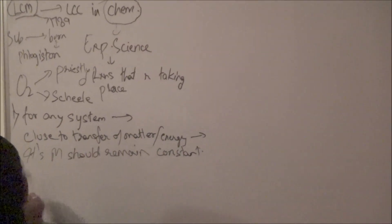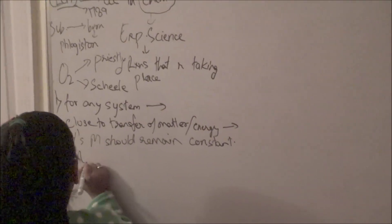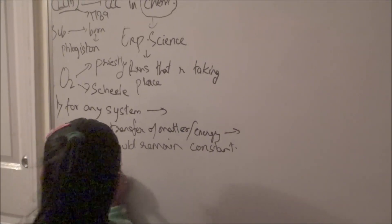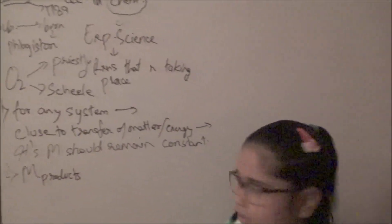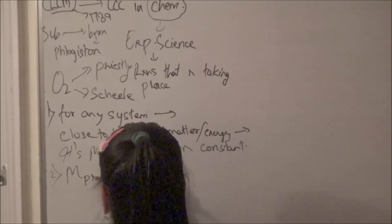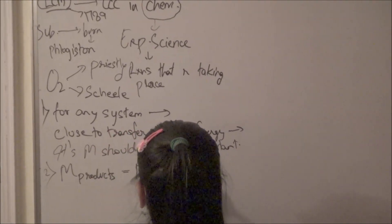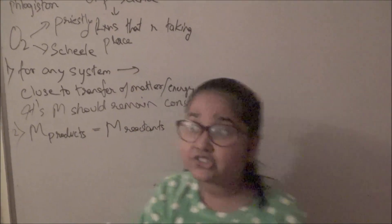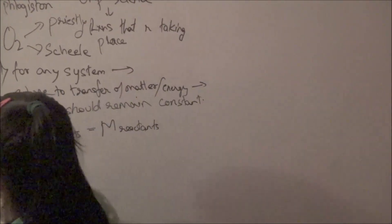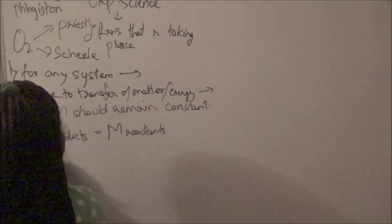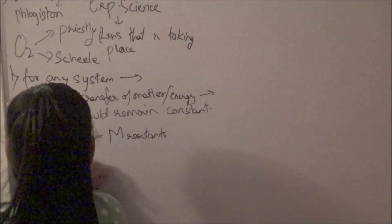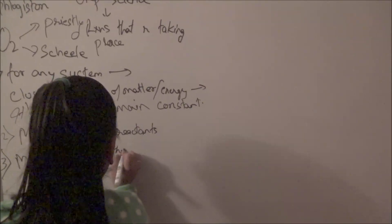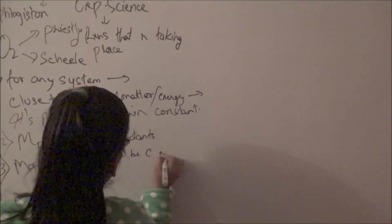And we can say the mass of products that are produced during the physical or chemical change is equal to the mass of reactants which are at the beginning of our physical or chemical change. Or we can say matter.